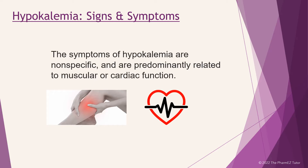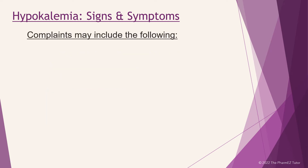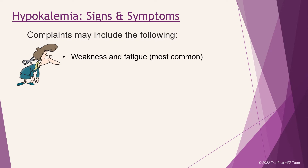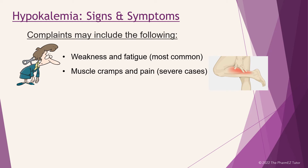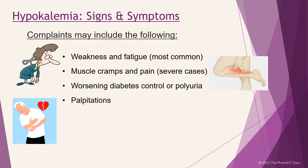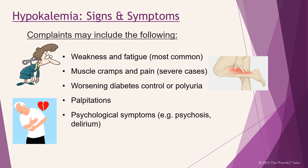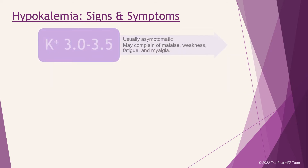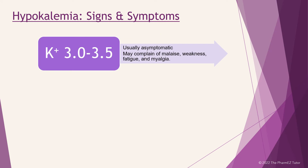The signs and symptoms of hypokalemia are nonspecific and predominantly related to muscular or cardiac function. Complaints may include weakness and fatigue, which is the most common symptom; muscle cramps and pain in severe cases; worsening diabetes control or polyuria; palpitations; and psychological symptoms such as psychosis and delirium. With a potassium level between 3 and 3.5, the patient is usually asymptomatic but may complain of malaise, weakness, fatigue, and myalgia.